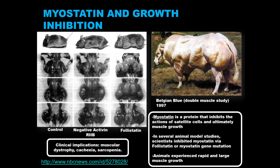The primary inhibitor of satellite cells is myostatin. Statins are chemicals that inhibit something, and given that 'myo' refers to muscle, myostatin is a hormone-like molecule that inhibits muscle growth via inhibition of satellite cells. We all have myostatin, and there has been only one known case of myostatin deficiency in humans. In animals, however, a genetic mutation was discovered in a breed of cattle that results in myostatin deficiency, and you can clearly see the dramatic effects on the whole body musculature.